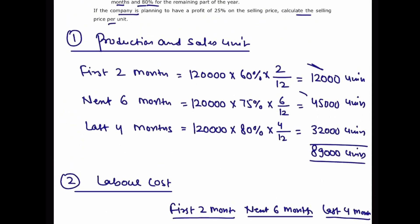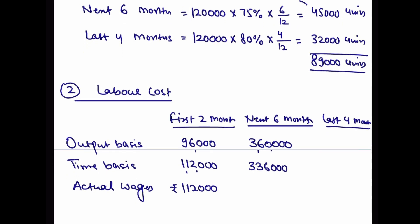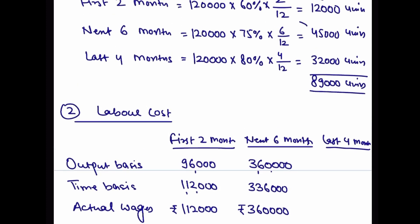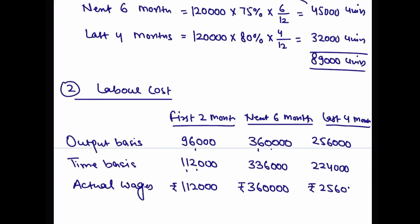Next 6 months: units = 45,000. Output basis: 45,000 multiply by 8 = 3,60,000. Time basis: 56,000 per month multiply by 6 = 3,36,000. Output basis is higher, so wages for next 6 months = 3,60,000. Last 4 months: units = 32,000. Output basis: 32,000 multiply by 8 = 2,56,000. Time basis: 56,000 multiply by 4 = 2,24,000. Output basis is higher at 2,56,000, so last 4 months wages = 2,56,000.